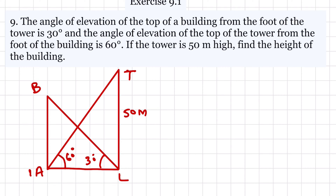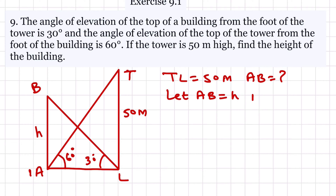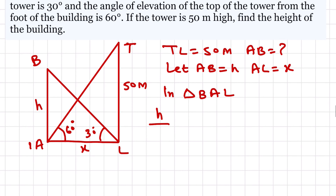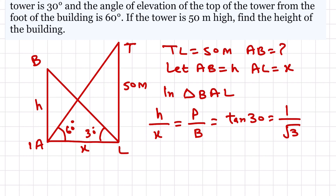TL is given as 50 meters. We have to find AB. Let AB = h and AL = x. In triangle BAL, h upon x equals perpendicular upon base, which is tan 30°. The value of tan 30° is 1 over root 3, so h upon x equals 1 over root 3. Therefore x = root 3 × h.